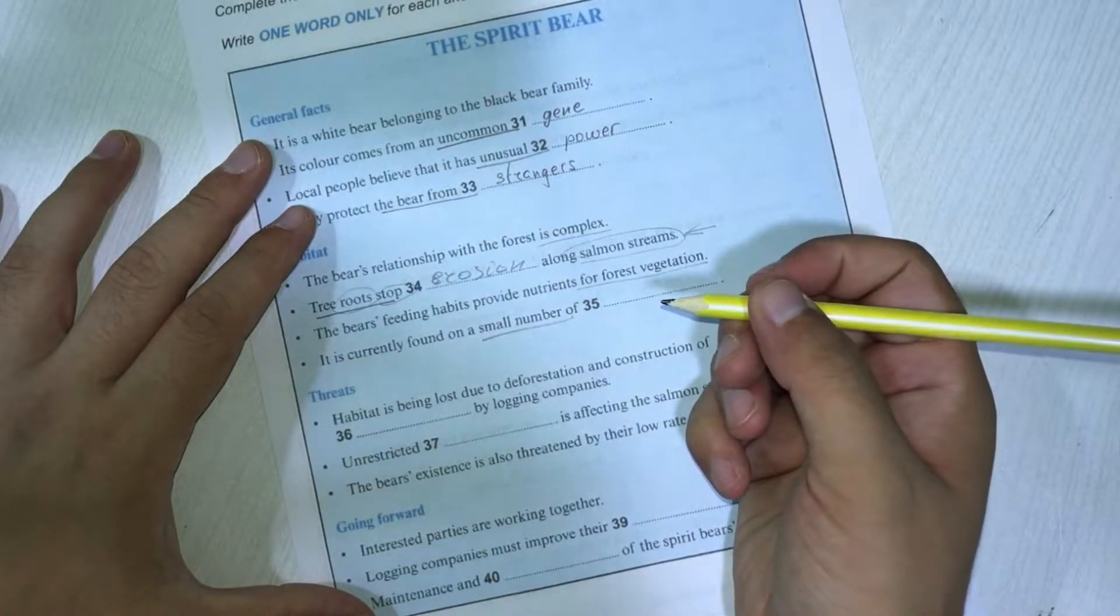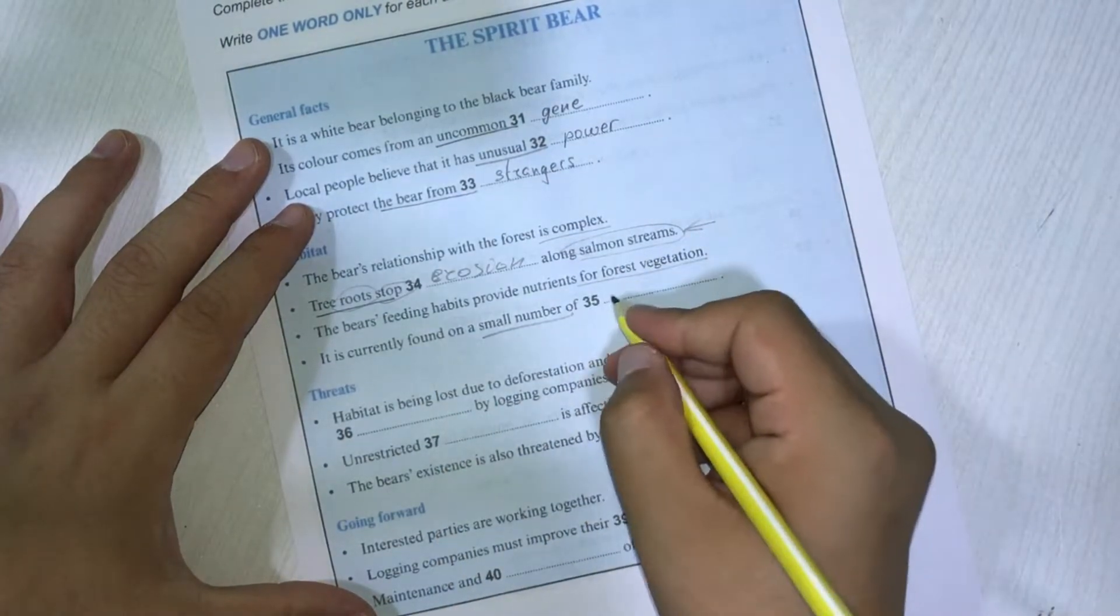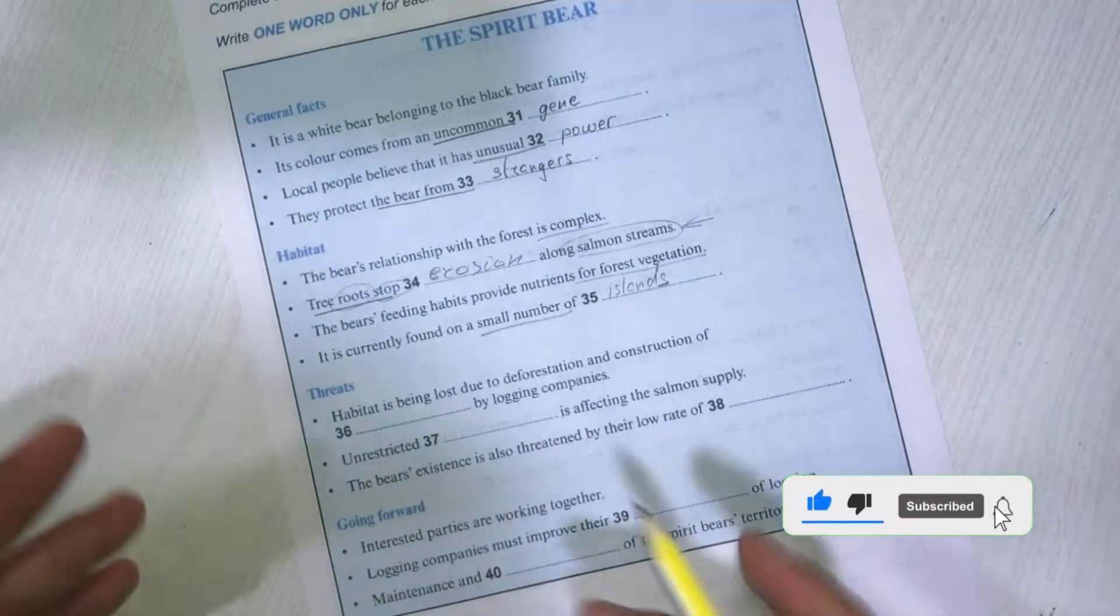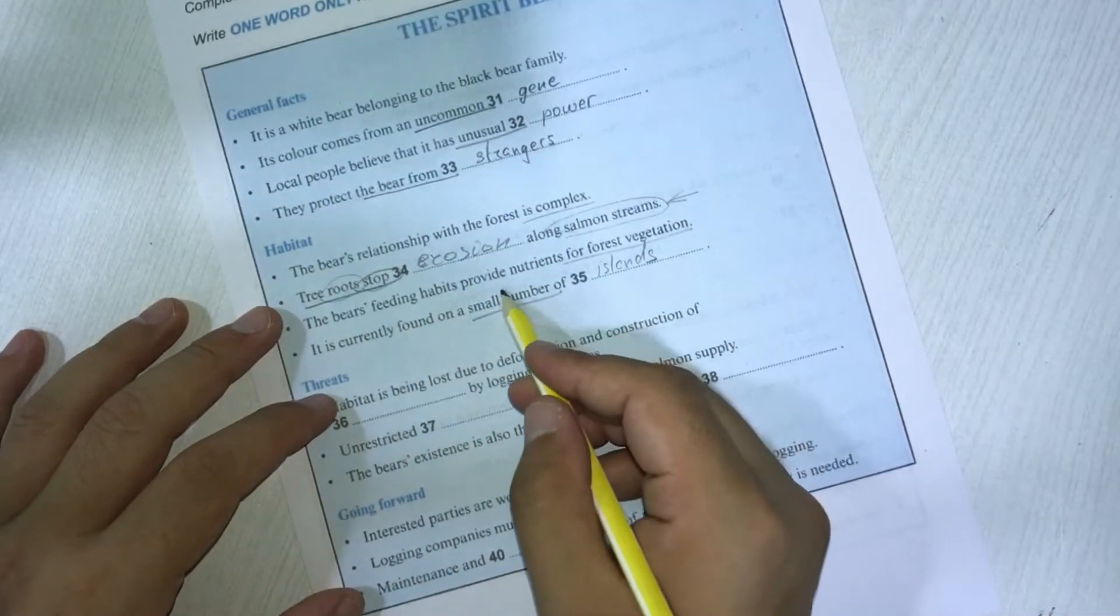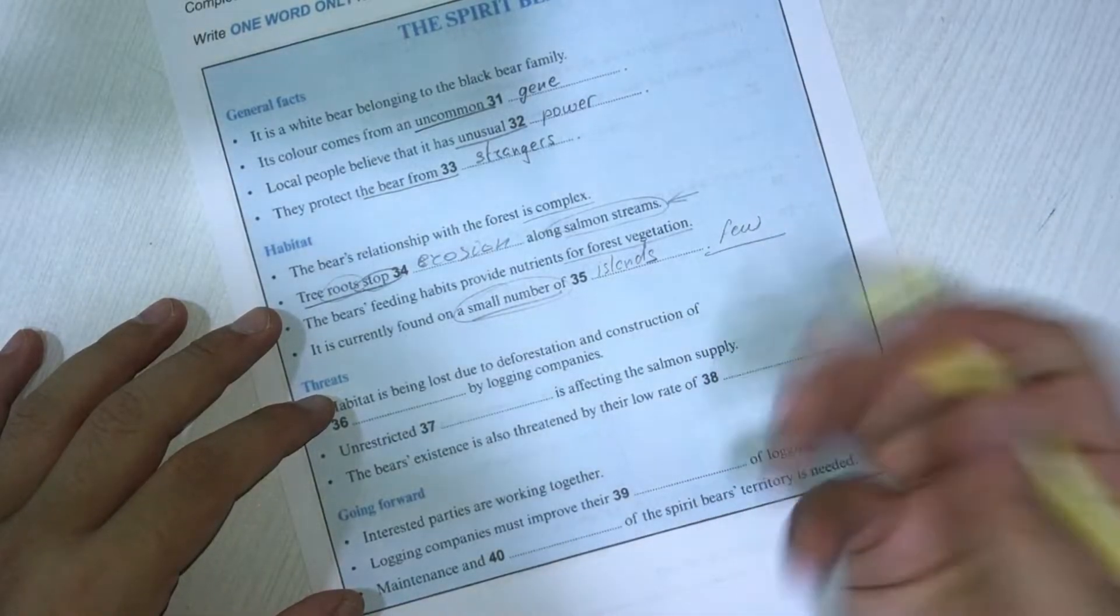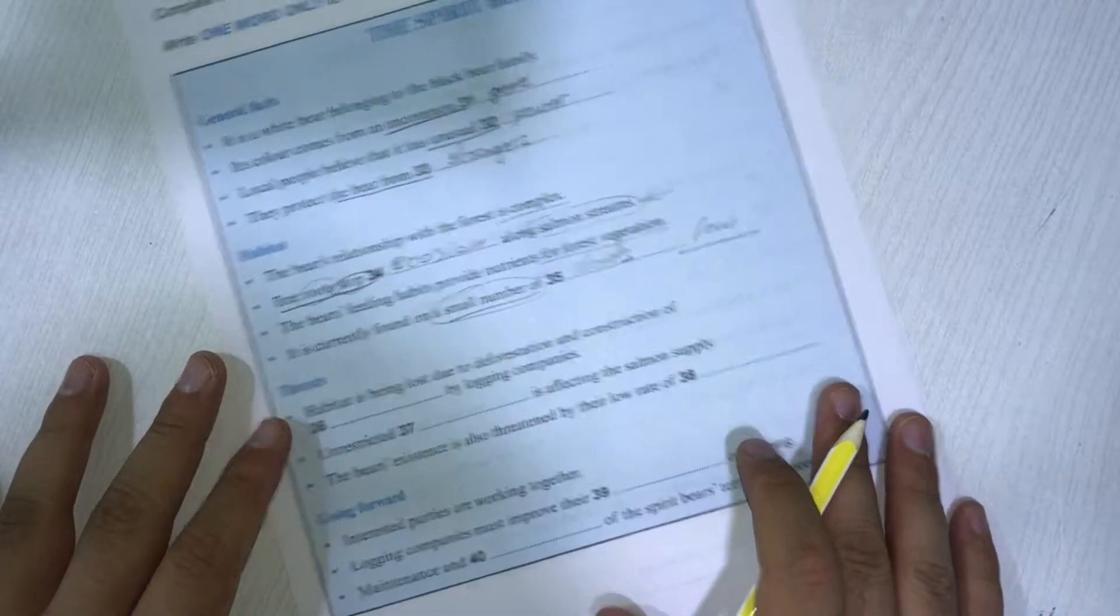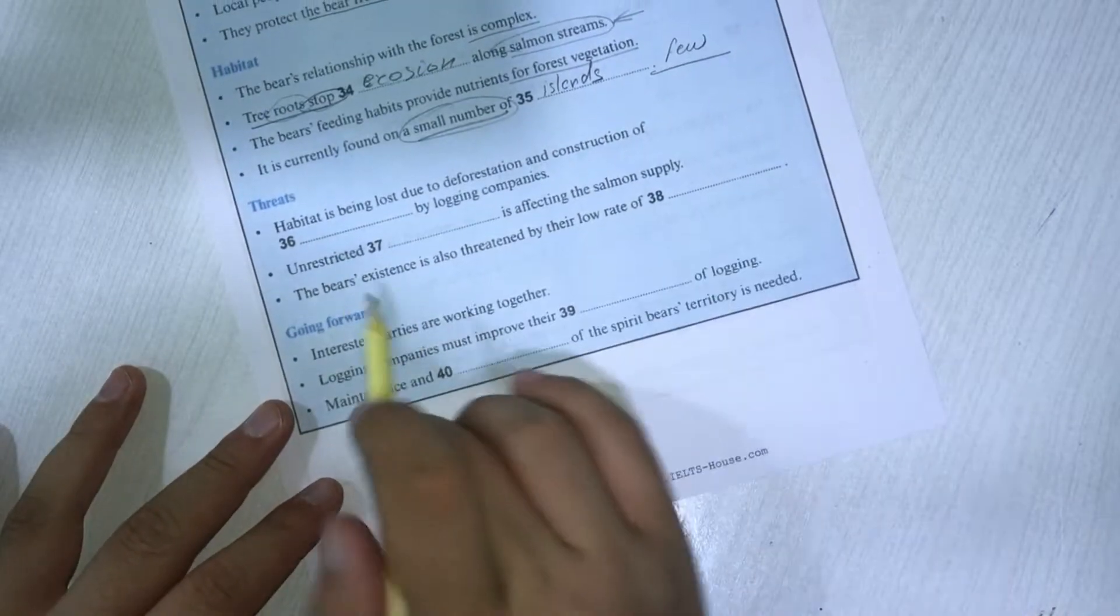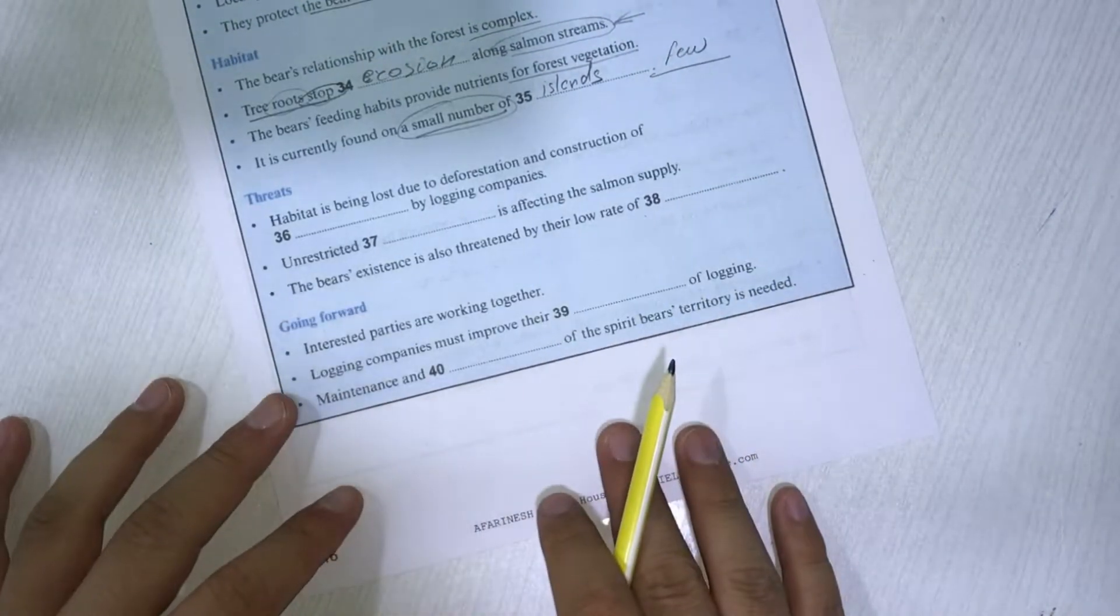The audio continues: Today, the spirit bear lives off the coast of the province of British Columbia on a few islands. There is great concern for their survival. As you can see, instead of stop, it said prevent, and here instead of small number, it said few. As I mentioned, you have to know the synonyms pretty well because otherwise you may have a hard time understanding what they're talking about. Now I'll play the video and answer questions 36, 37, 38 and then pause again.